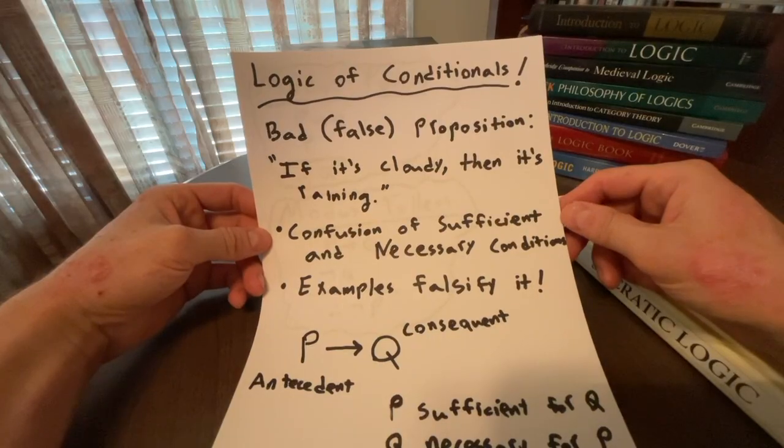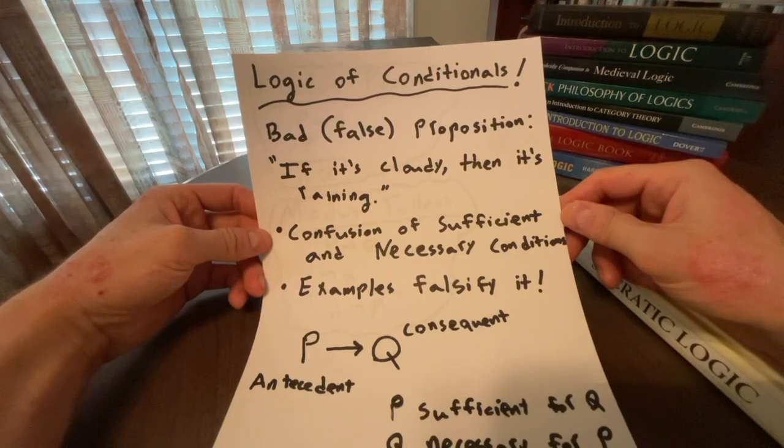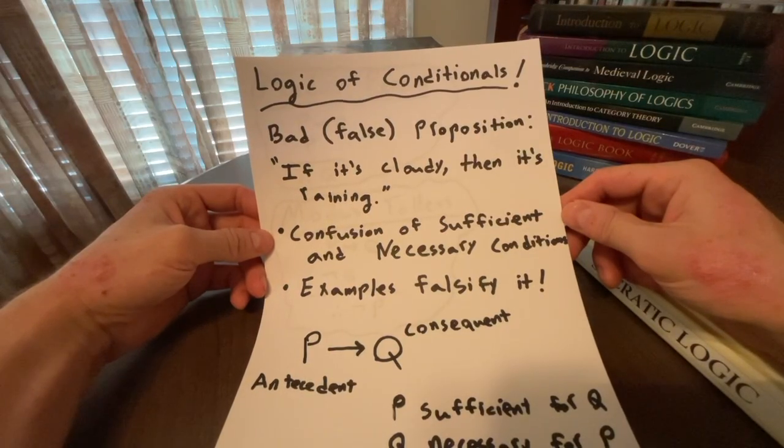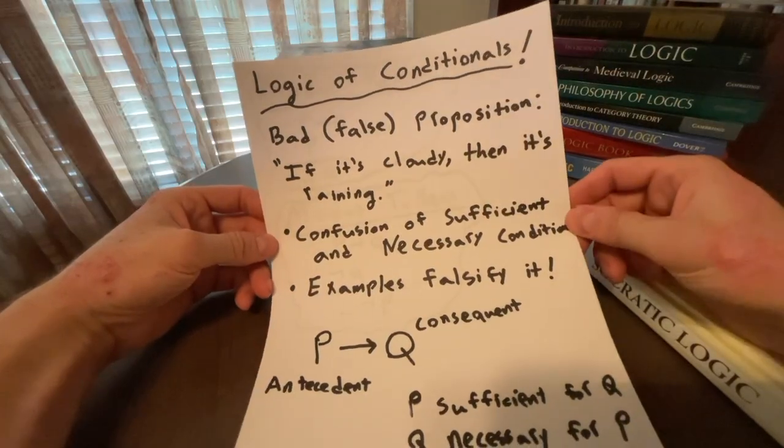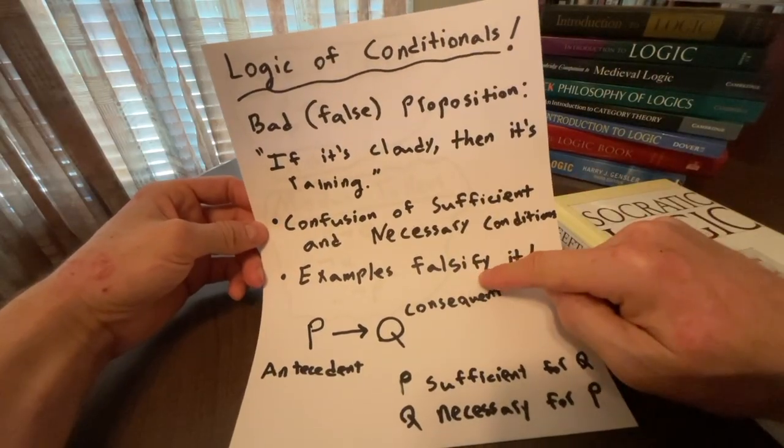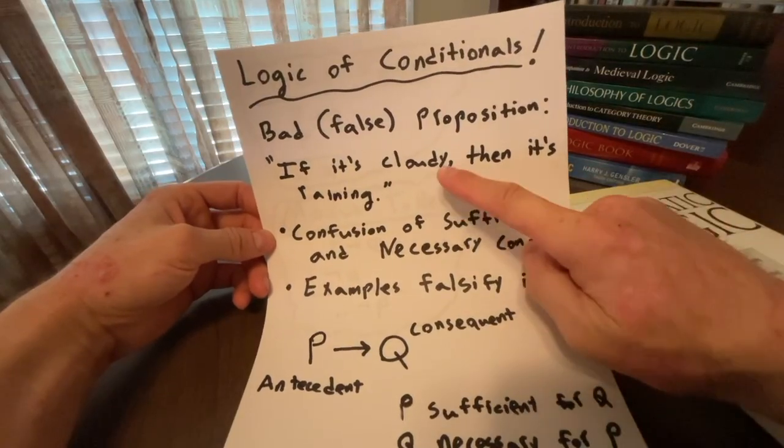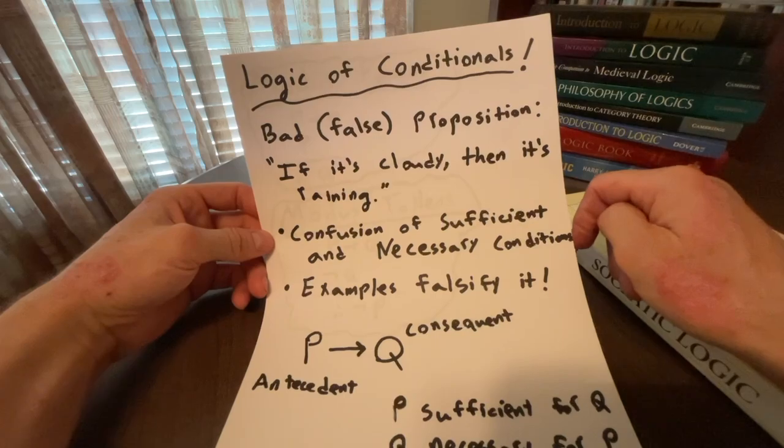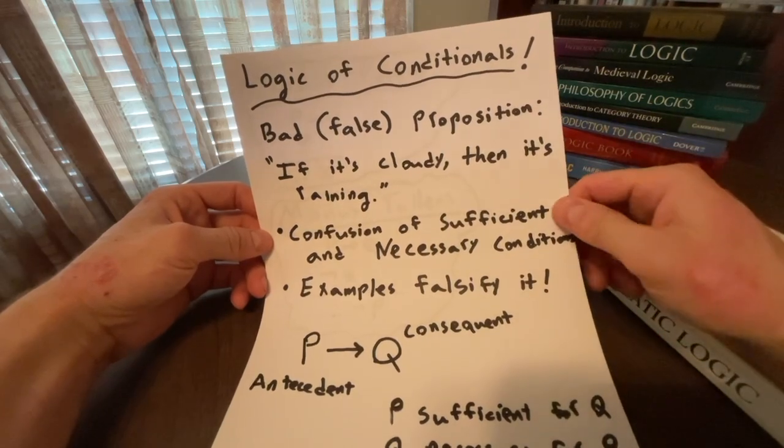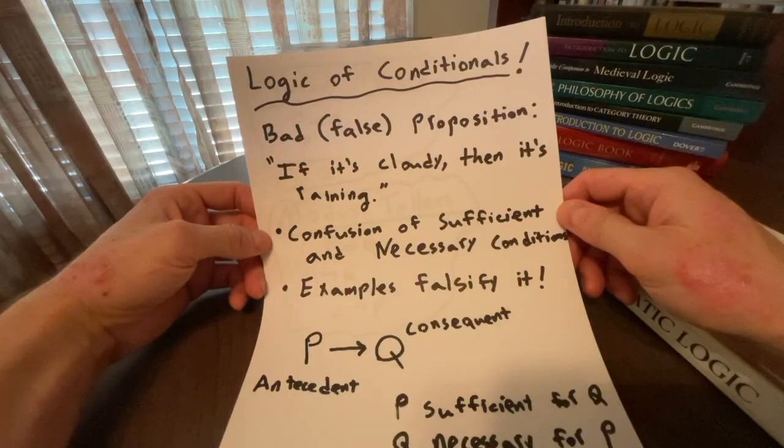Now, clouds are necessary for it to be raining, but it's not sufficient. Just having clouds does not mean there's going to be rain. So there's this distinction between sufficient and necessary conditions, which is very important to understand if you really want to understand a conditional. And again, we can falsify it. I look outside. It is cloudy, but it's not raining. So we have a counterexample. This is a false proposition, just a bad proposition. So we have to understand this distinction between sufficient and necessary conditions.